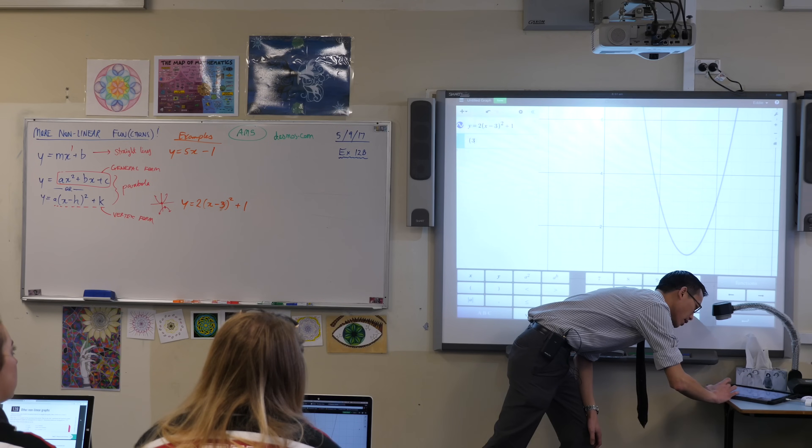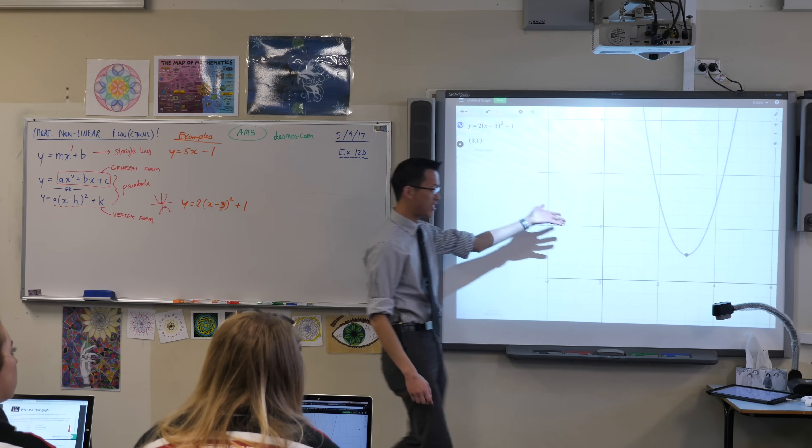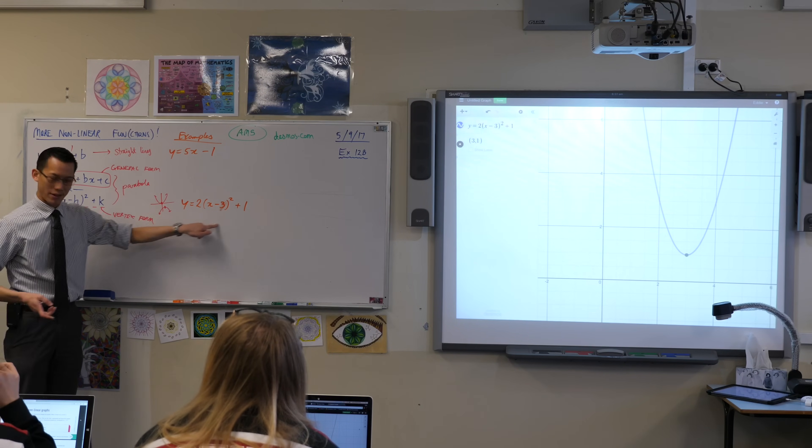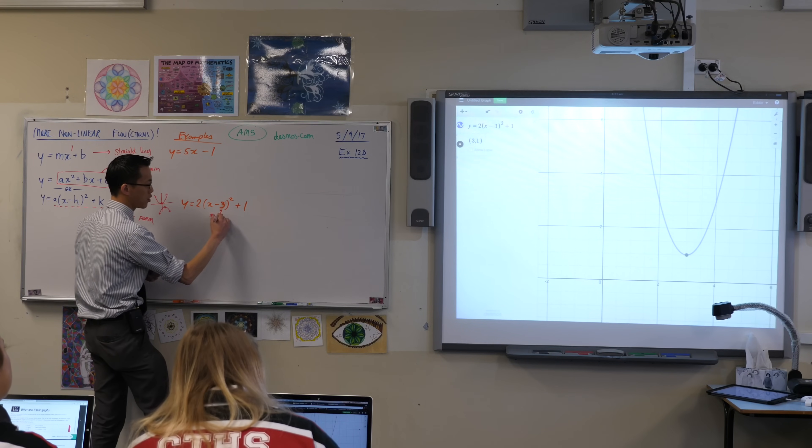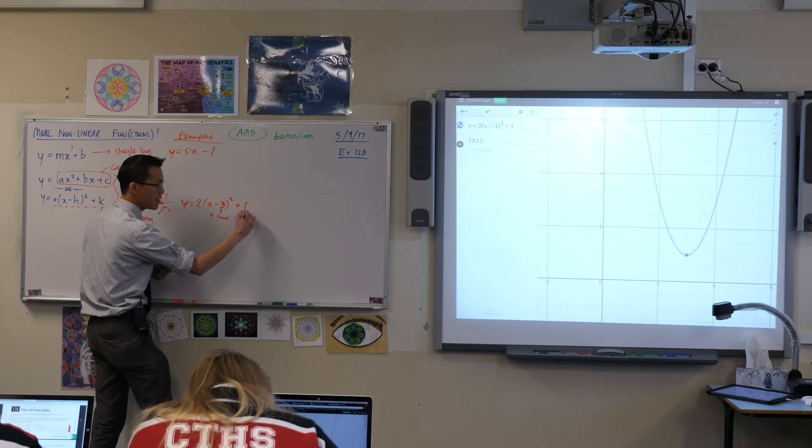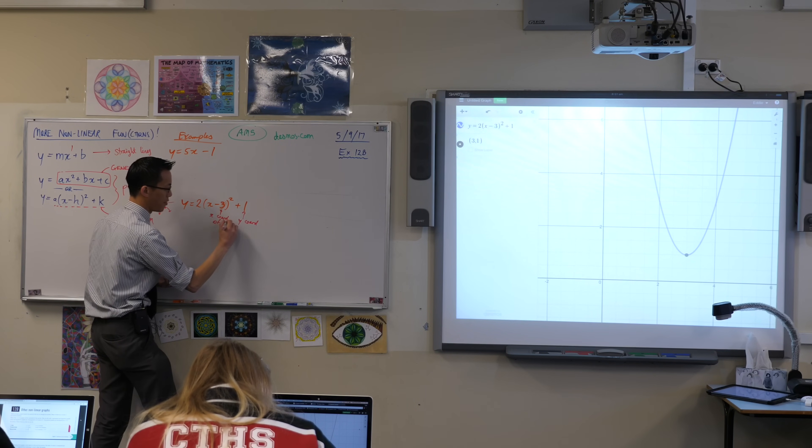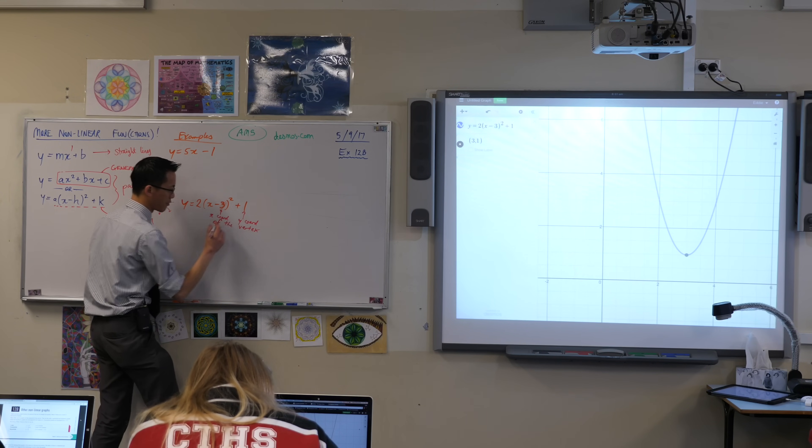In fact, you can even type in, Desmos is really nice, it'll take coordinates for you if you like. I was saying 3 comma, not 2 commas, just 1. 3 comma 1. There he is. Right there at the vertex. Okay. So when you see something written in this form, this guy is the x coordinate and this guy is the y coordinate of the vertex.